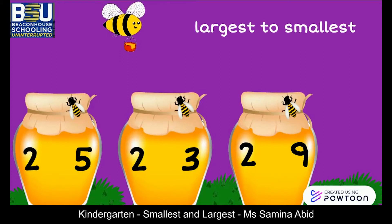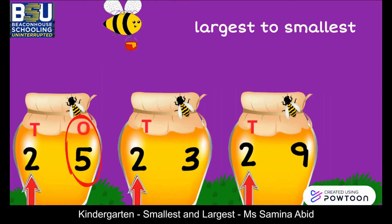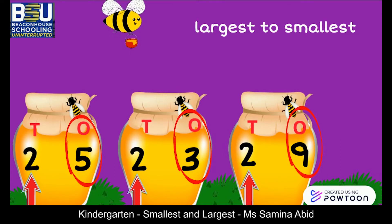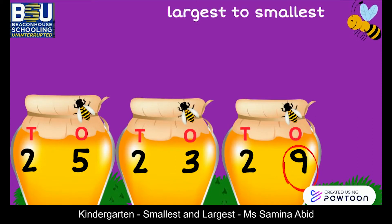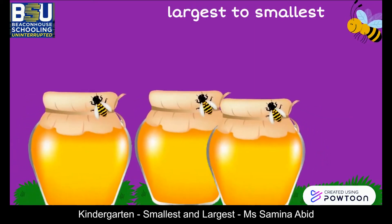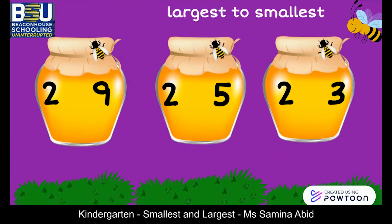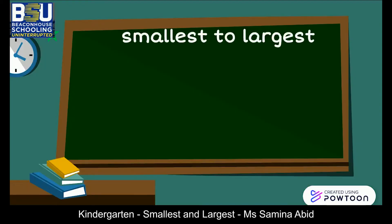Now we will arrange these numbers from largest to smallest. The numbers are 25, 23, and 29. Each number has two tens. There are five ones in 25, three ones in 23, and nine ones in 29. The largest number is 29 and the smallest is 23, so the order will be 29, 25, and 23.